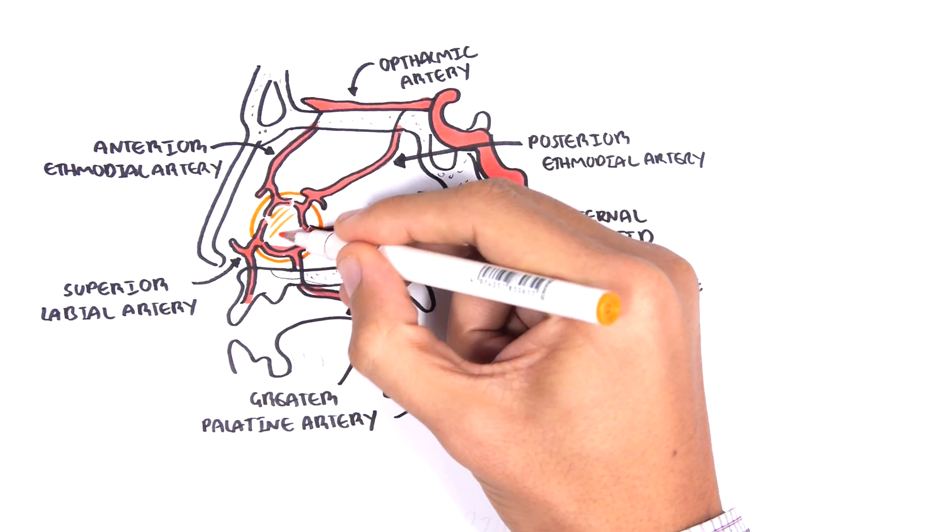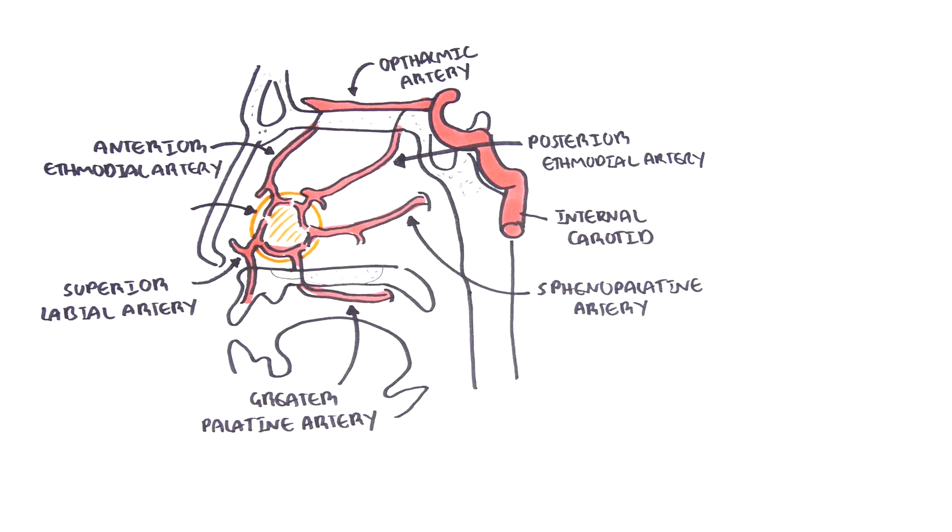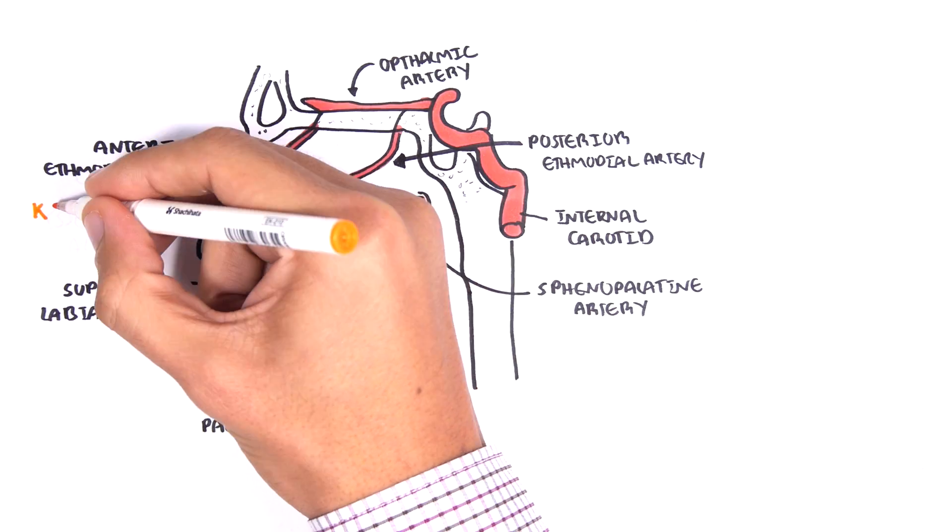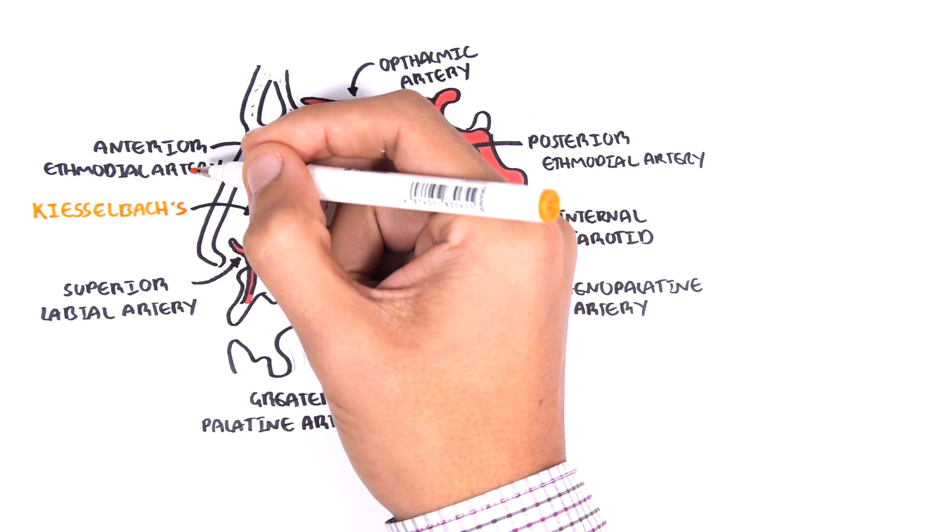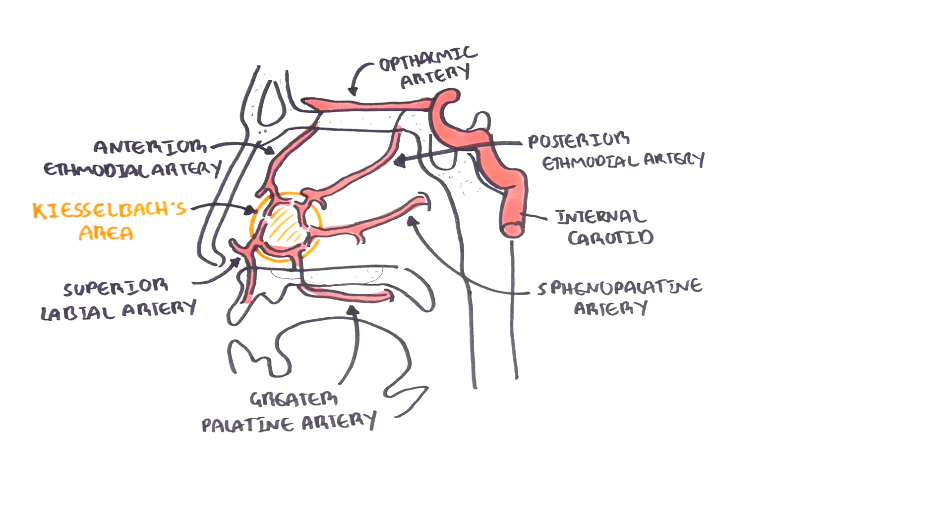This area, which I'm talking about a lot, is essentially where many of these arteries meet up. This is called Kesselbach's area or Little's area, and this is a common source or site of nosebleeds.